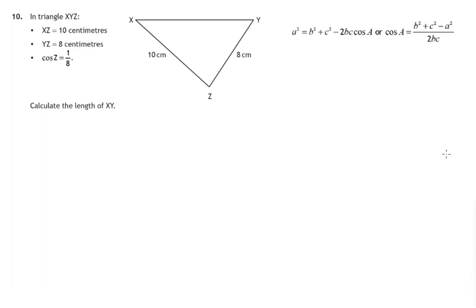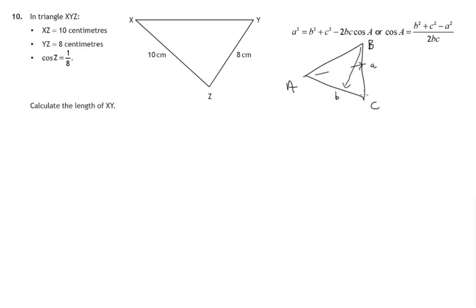Now on the formula sheet that you're given, this is the cosine rule, and it's made up for a triangle ABC. Remember, the convention is that if you have a triangle ABC, then the side opposite angle A is little a, the side opposite angle B is called little b, and the side opposite angle C is called little c. So in this case, where we've got X, Y, Z, the side opposite angle Y would be called little y, the side opposite angle X would be called little x, and the side opposite angle Z would be called little z.